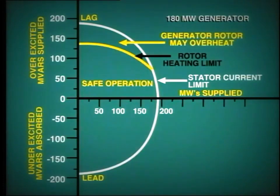This curve shows the limitation due to rotor heating. You can see that we can operate this generator at 180 megawatts and zero megavars. But if we needed to produce, say, 100 megavars, then we would have to reduce the active power output to 140 megawatts in order to keep within the established rotor heating limits.